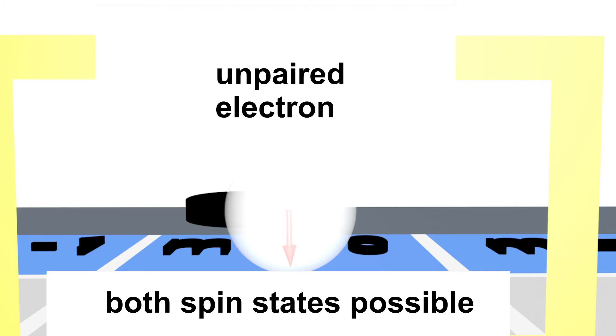This electron can assume both spin states, spin down or spin up, without breaking the Pauli principle.